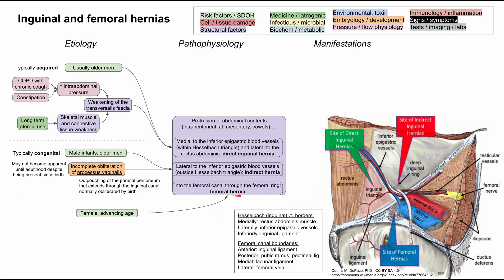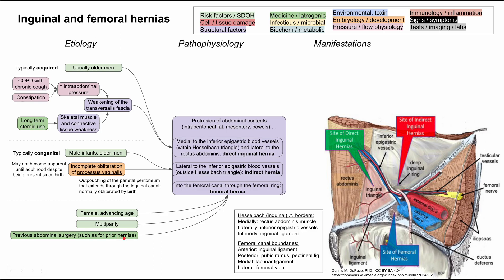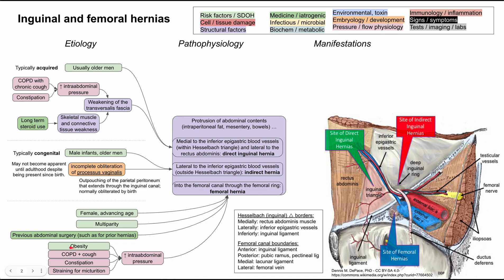Lastly, let's look at the femoral hernia. This happens in females typically as they get older with advancing age. There are a couple of risk factors worth knowing: multi-parity, meaning the female has had multiple babies throughout her reproductive years, and previous abdominal surgery. This hernia is also caused by increased intra-abdominal pressure — so COPD with cough, constipation, obesity, and straining for micturition can all increase intra-abdominal pressure and contribute.